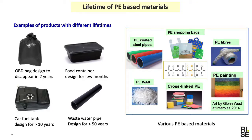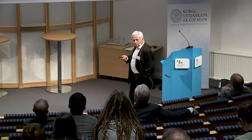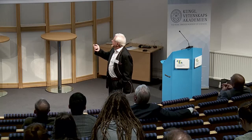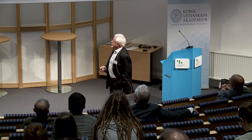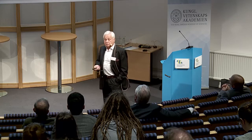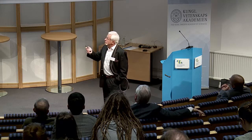I can show you that polyethylene can be used for many different applications — coating steel pipes, shopping bags, different qualities. We can make fibers, waxes, cross-linked polyethylene which will be a thermoset, and we can even create paints. We can also use polyethylene as a thermoplastic for different applications. Here we have a plastic bag made oxo-biodegradable, so it will degrade within two years.